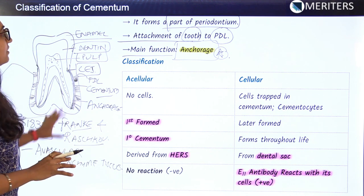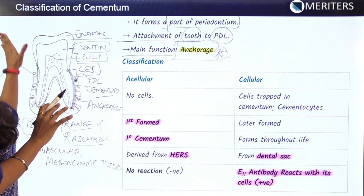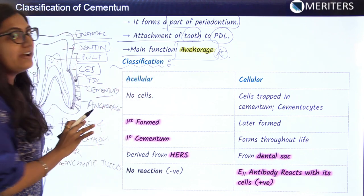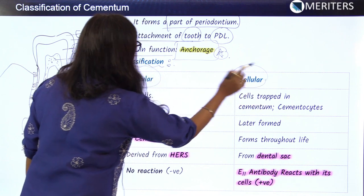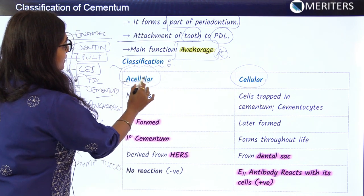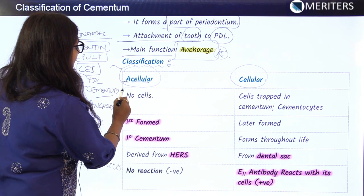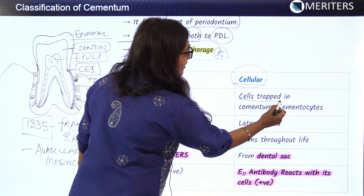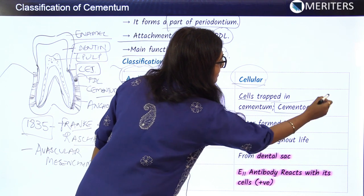Cementum was first demonstrated by scientists Frankie and Raschko in 1835. Now, the classification: cementum is primarily classified into acellular cementum and cellular cementum. As the name suggests, acellular means no cells. In cellular cementum, cells are trapped in lacunae called cementocytes.